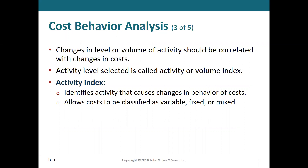Any changes in volume of activities have to be related back to some kind of change in cost — it might be the number of hours employees are working, the ingredients put into something you cook, or the raw materials put into a manufacturing process. Whatever activity or volume you are measuring is going to be called an index. Your activity index identifies what activity changes your costs, and then you can have a variable cost, a fixed cost, or a mixed cost.